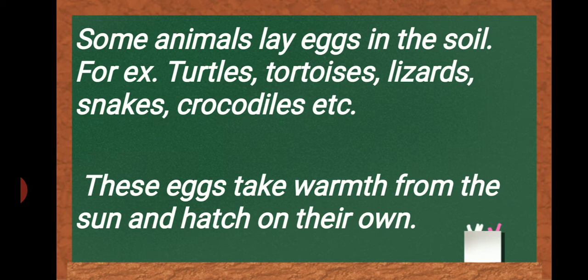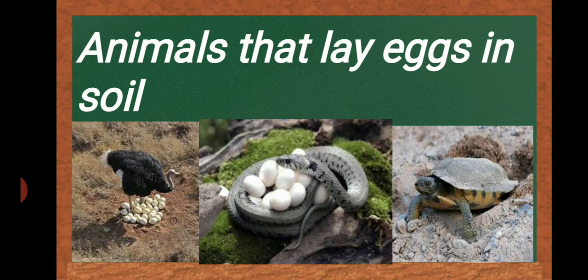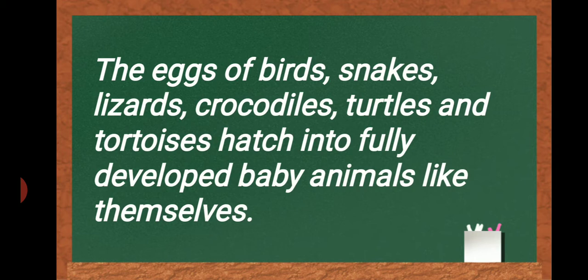There are some birds also that lay eggs in the soil, on the ground, like ostrich, as you can see here. These are laying eggs in the soil. The eggs of birds, snakes, lizards, crocodiles, turtles, and tortoises hatch into fully developed baby animals like themselves.